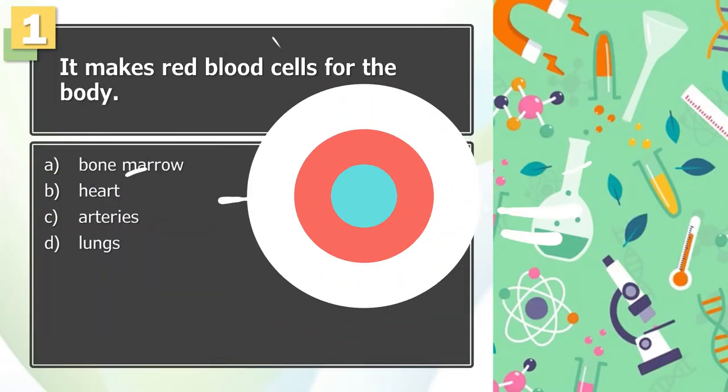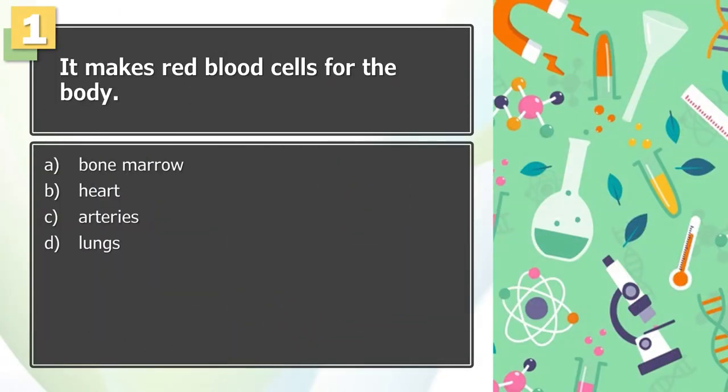Number 1: It makes red blood cells for the body. A. Bone marrow, B. Heart, C. Arteries, D. Lungs.